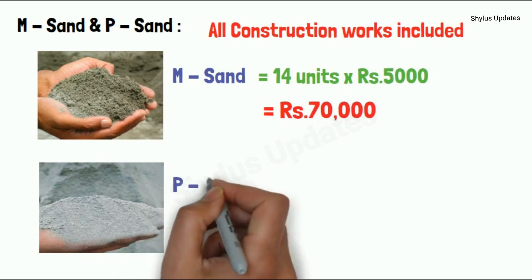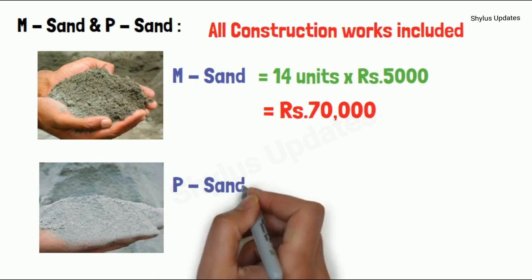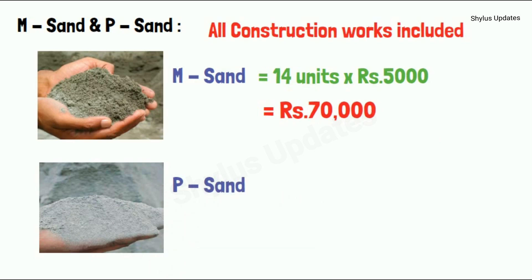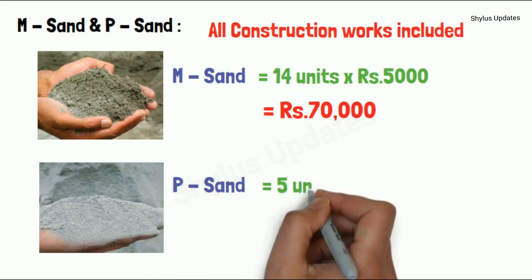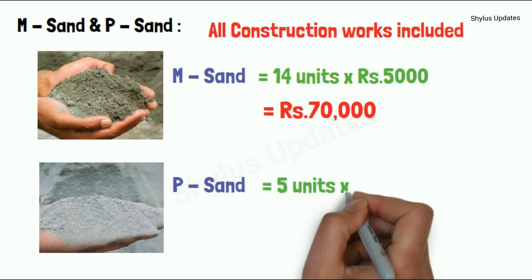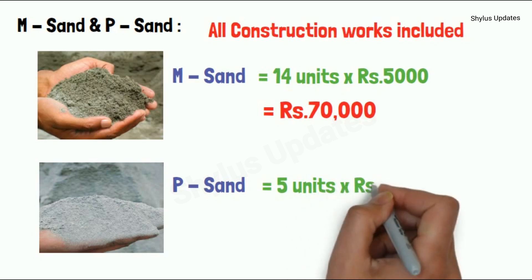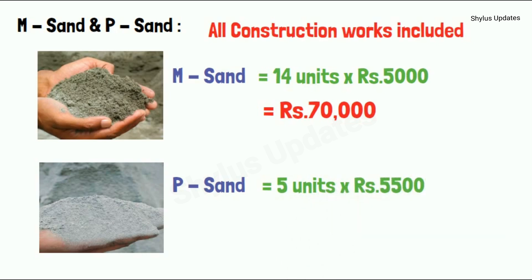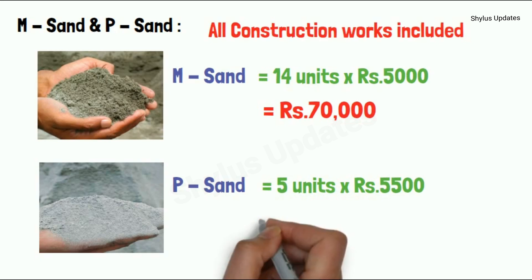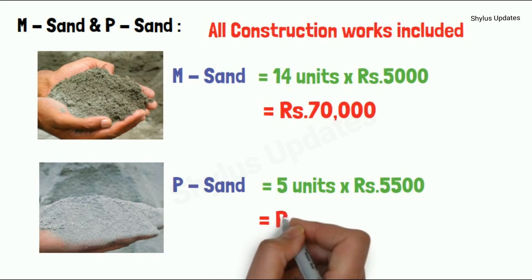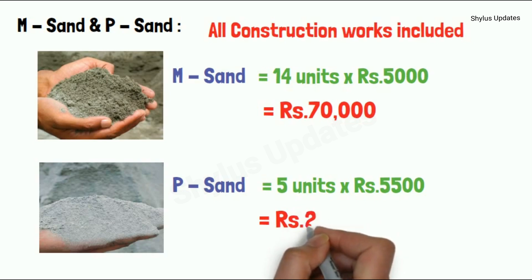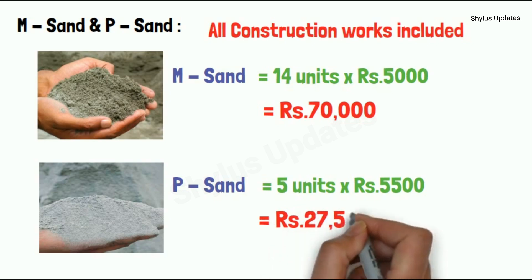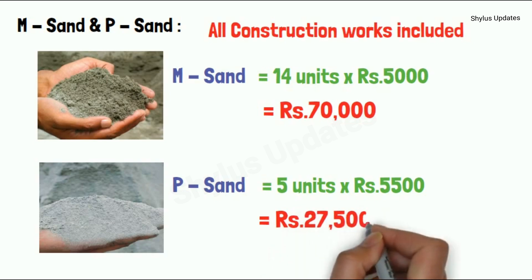P-Sand. For a 700 square feet house, 5 units of P-Sand is required. The current market rate of P-Sand is Rs. 5,500 per unit. When you multiply 5 units into Rs. 5,500, you get Rs. 27,500.